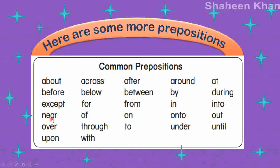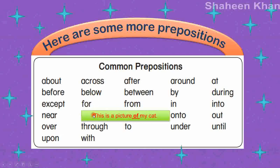Now let's check the other words. 'Near' — the baby is near the toy tunnel, so 'near' is a preposition talking about location and position. Then we have 'over,' 'upon,' 'across,' 'below,' 'far,' and 'off.' How do we use 'off' as a preposition? For example: 'This is a picture of my cat.' You have 'this is a picture' as a group of words, and then the noun 'my cat,' connected by the word 'off.' The picture is whose? My cat's. So 'off' is the glue word — a connecting word, the preposition.